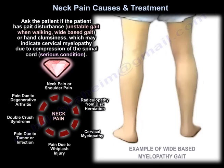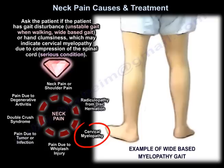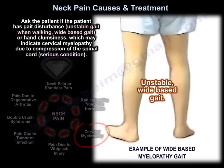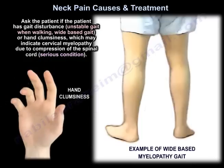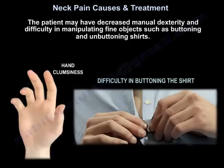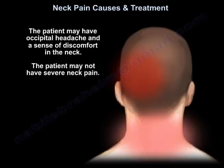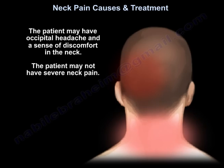Ask the patient if they have gait disturbance, unstable gait when walking, wide-based gait, or hand clumsiness. These may indicate cervical myelopathy due to compression of the spinal cord, which is a serious condition. The patient may have decreased manual dexterity and difficulty manipulating fine objects such as buttoning and unbuttoning shirts. The patient may also have occipital headache and discomfort in the neck without severe neck pain.